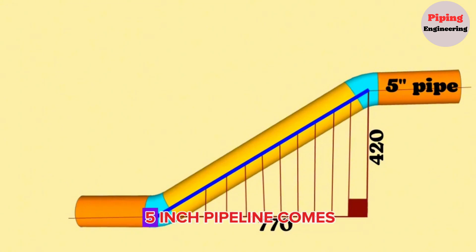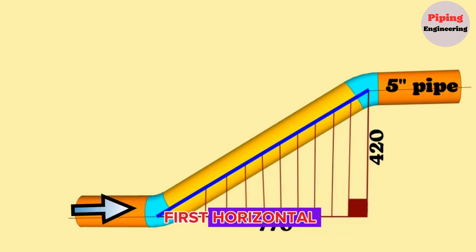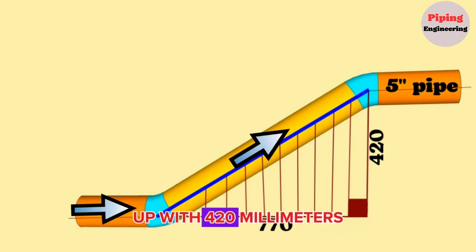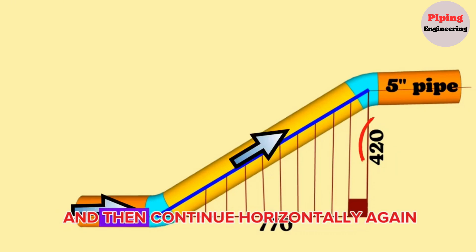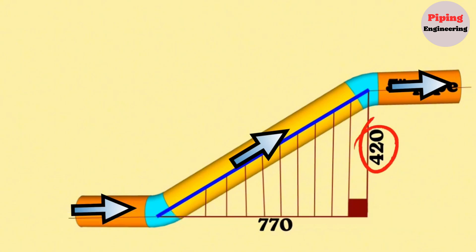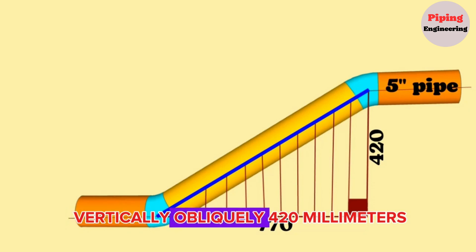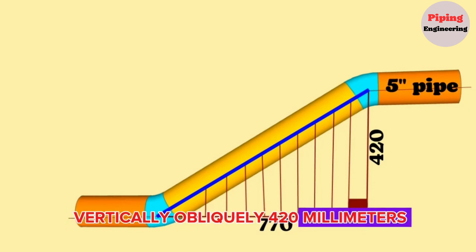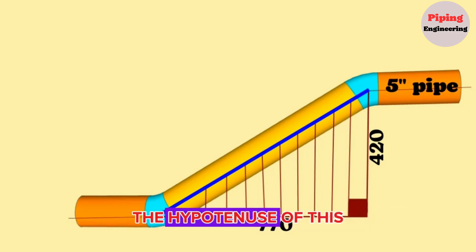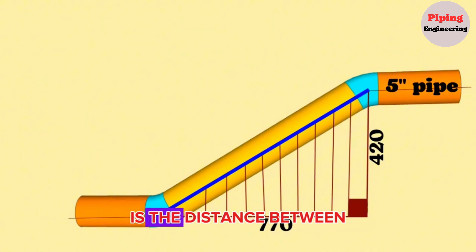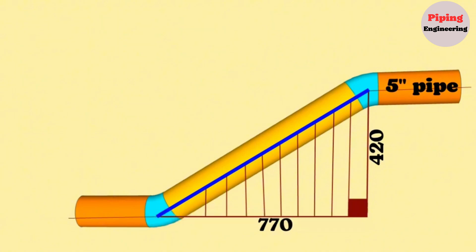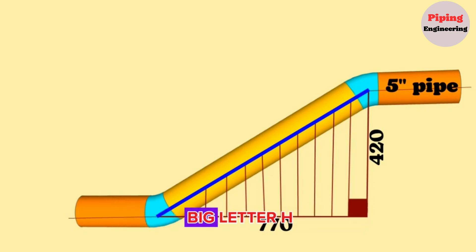As you can see, the 5-inch pipeline comes first horizontal, then vertical up with 420 mm, and then continues horizontally again. A right triangle is formed with dashed lines after the pipeline rises vertically obliquely 420 mm. The hypotenuse of this right angle triangle is the distance between the elbows in the pipeline. Let's mark the hypotenuse of this vertical right angle triangle with the letter H.